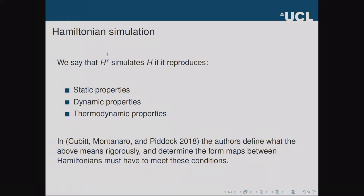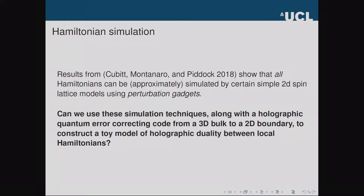We're going to address this using Hamiltonian simulation theory. By saying one Hamiltonian simulates another, I mean it captures all the physics: if H' simulates H, it reproduces the static, dynamic, and thermodynamic properties of H. In a paper last year, Cubitt, Montanaro, and Piddock put this on a rigorous footing, defining exactly what these conditions mean, determining the forms maps between Hamiltonians must have, and showing that all Hamiltonians can be simulated by certain simple 2D spin lattice models using a technique known as perturbation gadgets.